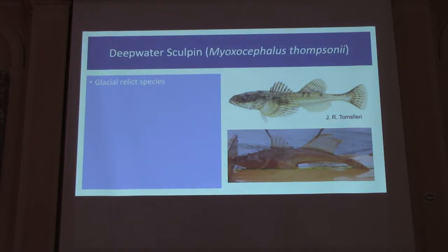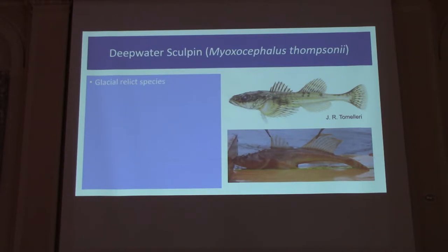Deepwater sculpin are this leftover species, basically. This is a species that was at the edge of the ice sheet, and as the ice sheet retreated, deepwater sculpin by and large went extinct. But in a few places where there were coldwater habitats that they could retreat into, deepwater sculpin persisted. You find those kind of things in just a few lakes throughout North America.